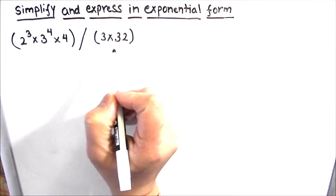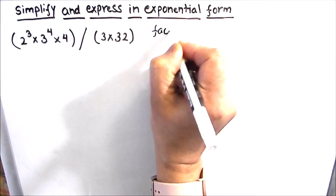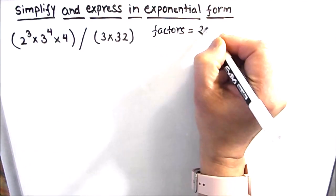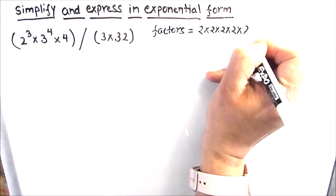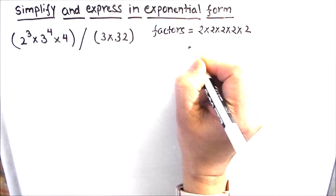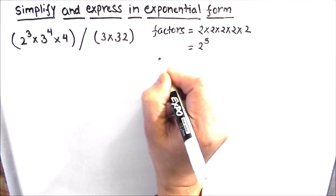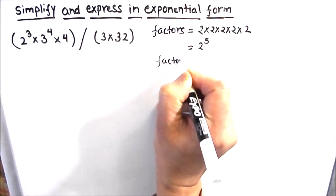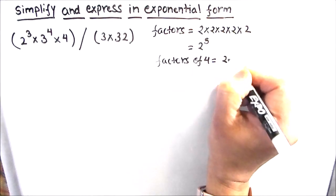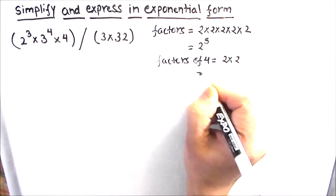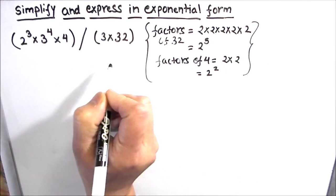Let us start by finding the factors of 32. The factors of 32 are 2 × 2 × 2 × 2 × 2, which can be written in exponential form as 2 raised to power 5. Similarly, factors of 4 are 2 × 2, which can be written as 2 squared.